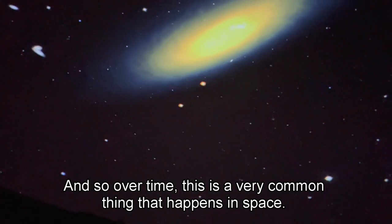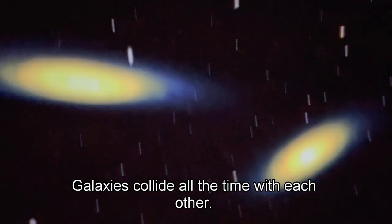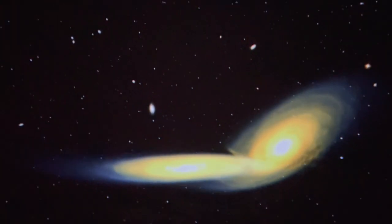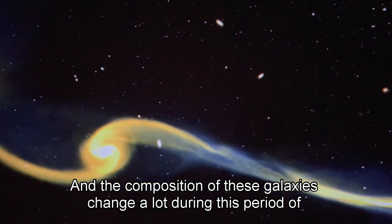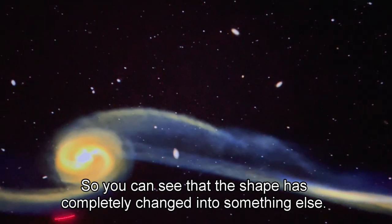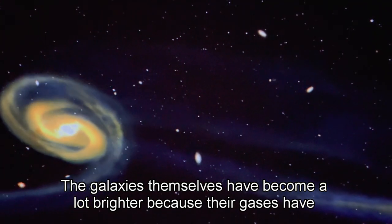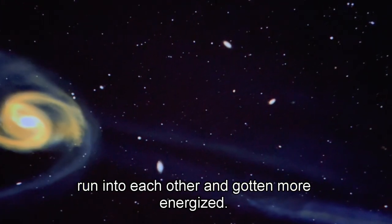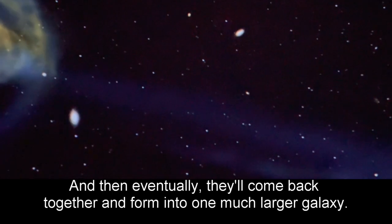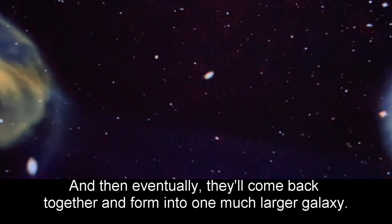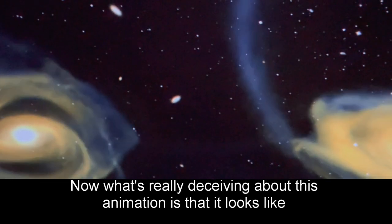Over time, galaxies collide all the time with each other. This is a very common thing that happens in space. First they tend to do a bit of a flyby, and the composition of these galaxies change a lot during this period of time. You can see that the shape has completely changed to something else. The galaxies themselves have become a lot brighter because their gases have run into each other and gotten more energized, and now a bunch of new stars are being formed because of that collision. Eventually they'll come back together and form into one much larger galaxy.